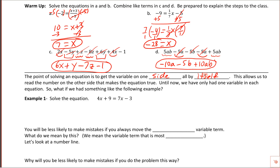Next: 7m plus 1 equals negative 8m minus 28. We're going to move the negative 8m by adding 8m to both sides — cross that off the right side. Then subtract 1 from both sides to move the constant. We end up with 15m equals negative 29. Dividing both sides by 15: 15 doesn't go into 29 evenly, so we write it as a fraction. Since 29 is prime, there are no common factors, and the answer is the improper fraction negative 29 over 15.